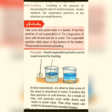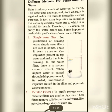Different methods for purification of water: rain is the primary source of water on the Earth. This water goes underground, from where it is regained in different forms to be used for various purposes. In fact, many impurities are mixed in this naturally available water, due to which it is harmful. Therefore it is essential to purify this water before use. Some important methods for purification of water are as follows.